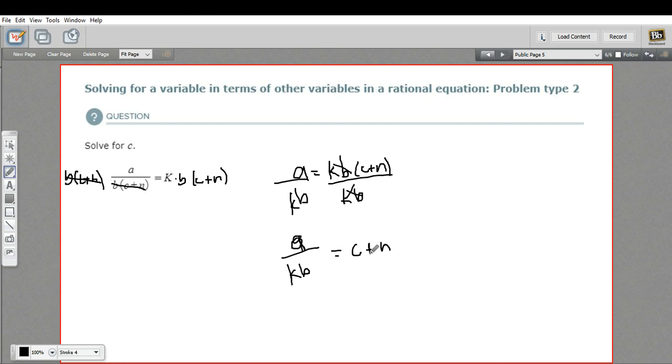All right, we're almost there. We're trying to solve for c. The last thing I need to do is just subtract n from both sides. So the left-hand side now becomes a over k times b minus n, and our right-hand side becomes c, and we have done it.